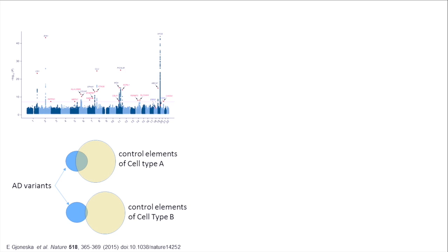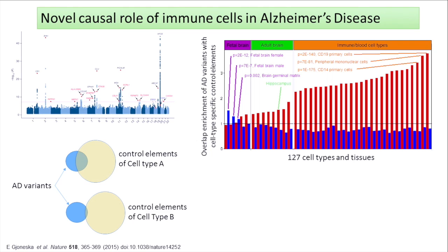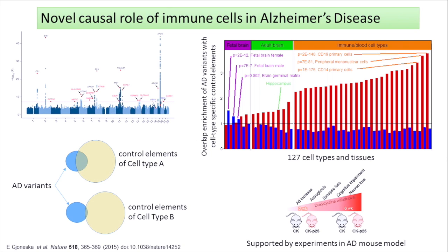Going back to the Alzheimer's example — we had a bunch of genetic variants associated with Alzheimer's, and more than half of them are not breaking genes; they are in the non-coding portion of the genome. We can answer a simple question: which cell type manifests the effects of Alzheimer's? It's a neurodegenerative disorder, so you might guess neurons. We took all the Alzheimer's-associated genetic variants and overlapped them with the control element landscapes of hundreds of cell types in our database. We realized it was not neuronal cells, but immune cell types that really pop up as harboring genetic variants associated with Alzheimer's disease — extremely counterintuitive clues about how to analyze disease. This was also validated in a mouse model.